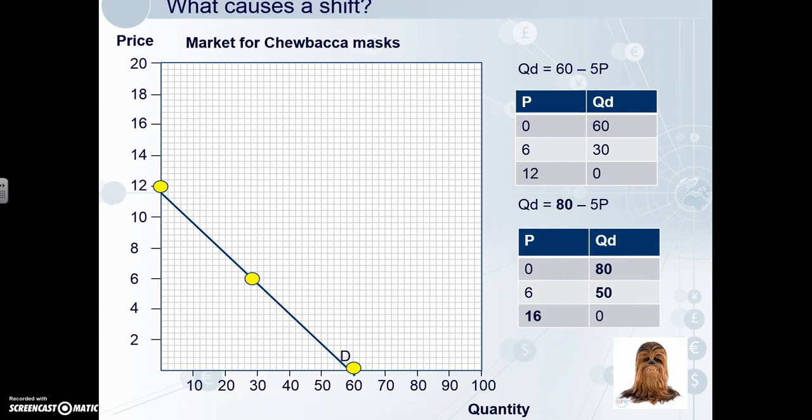Here are the values that you might have got, and we plot again. There we are — we see a parallel shift to the right. And of course, if A was decreased, we'd see a shift to the left.